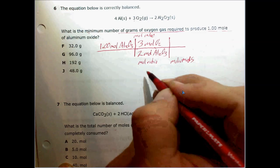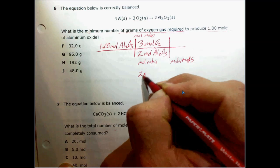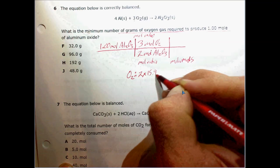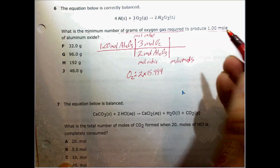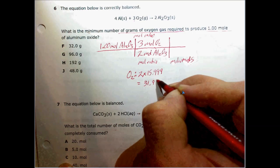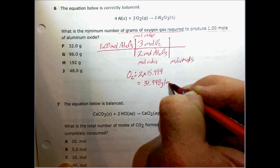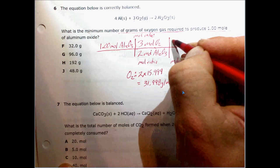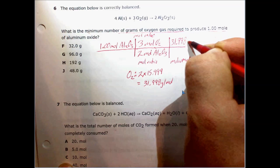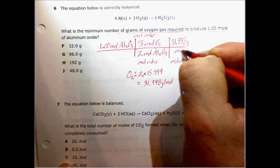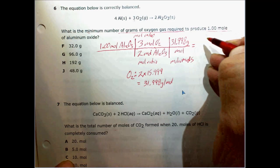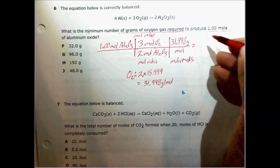Our molar mass of oxygen is just 2 times 15.999 — essentially 16 — and that's equal to 31.998 grams per mole. If you put in 32, you'd get a number so close that you could probably find the correct answer in the multiple choice.